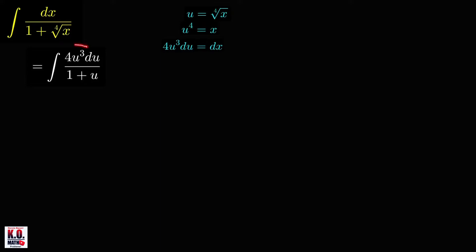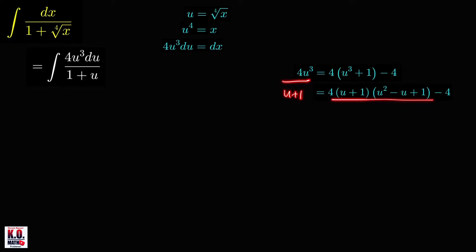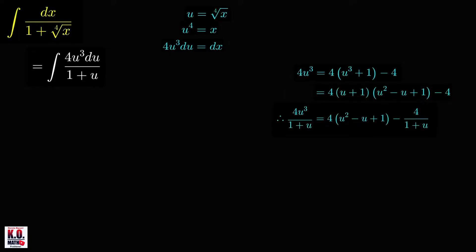So our integrand now is a rational function. We may evaluate this integral by first dividing these two polynomials. We can do long division, or we can write 4u cubed as 4 times the quantity u cubed plus 1, and then minus 4. And since this is a sum of two cubes, we can factor this to u plus 1 times the trinomial u squared minus u plus 1. Therefore, dividing both sides by u plus 1, we'll get 4 times the quantity u squared minus u plus 1, and then minus 4 over 1 plus u.